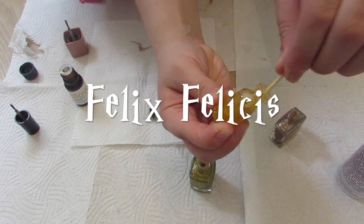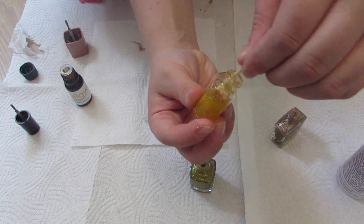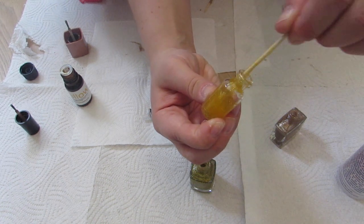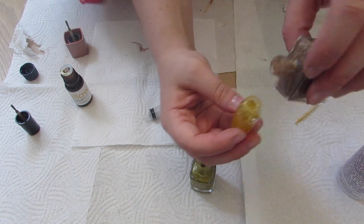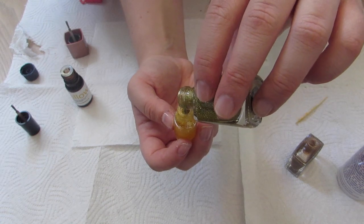So the first potion I'm making is Felix Felicis, which is also known as Liquid Luck. My camera cut out the beginning of this, but all I've done is I've mixed some yellow food colouring with this gold nail varnish you can see underneath, and then I've literally just added in some clear glue and mixed it up with my cocktail stick.